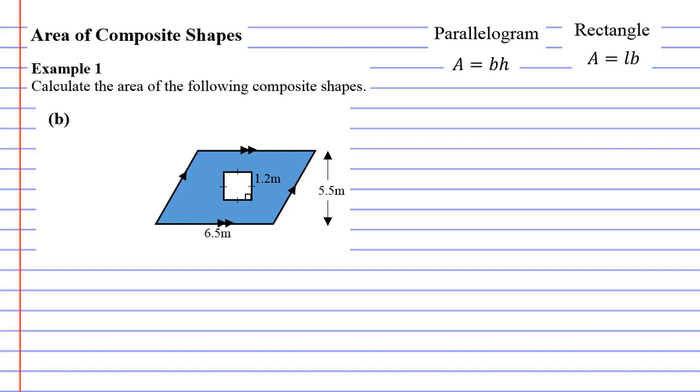Area of Composite Shapes, we're on to question B in example 1. This one's a little different because instead of adding two shapes together, they actually have cut a shape out of another shape. All that means is instead of adding our two areas together, we're going to subtract them instead at the end.